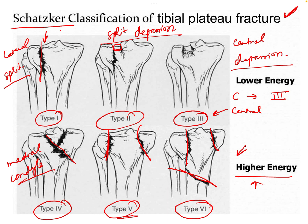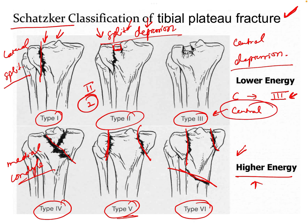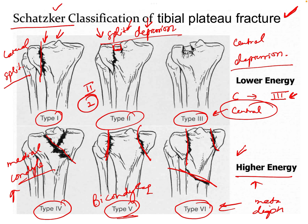To summarize the Schatzker classification: Type 1 is split only; Type 2 is split and depression; Type 3 is central depression only (the C mnemonic); Type 4 is medial condyle fracture; Type 5 is bicondylar; and Type 6 is metaphysis and diaphysis dissociation.